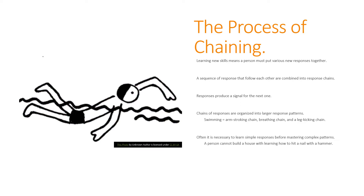The process of chaining: learning new skills means a person must put various new responses together. A sequence of responses that follow each other are combined into response chains — responses produce a signal for the next response. Think about swimming: you need to learn arm stroking, raising your arms above your head, then the breathing part, and finally the leg kicking part.